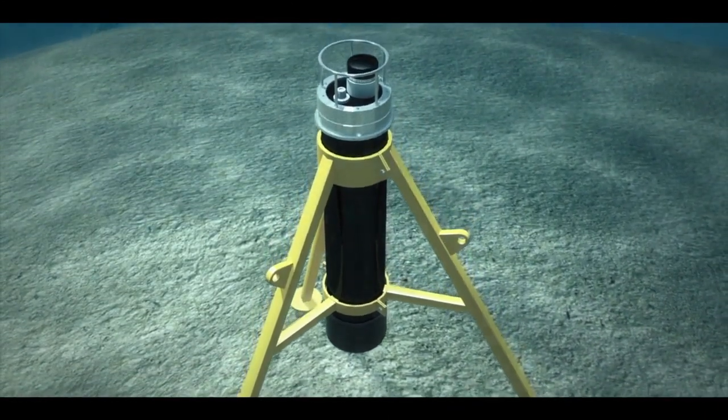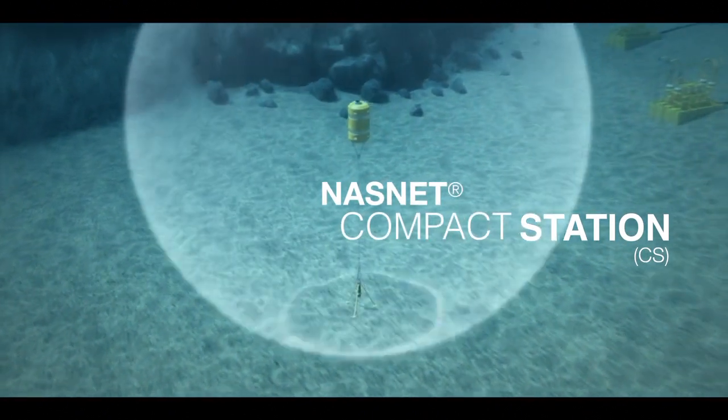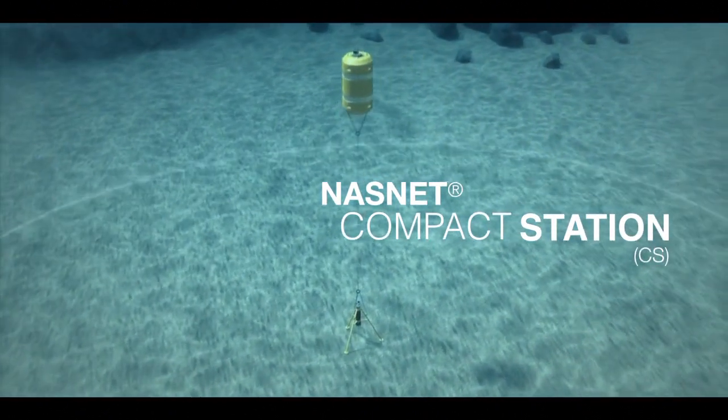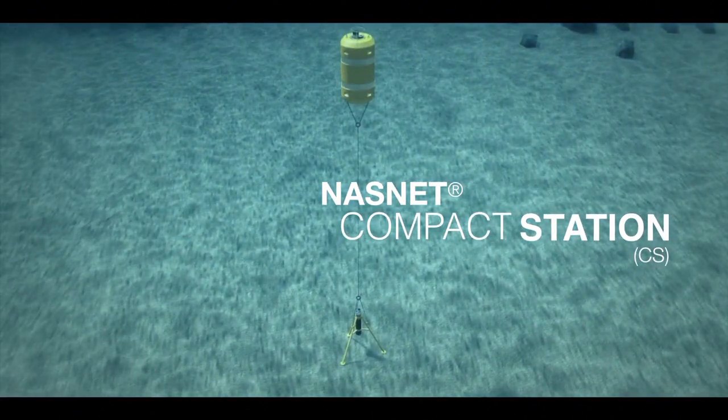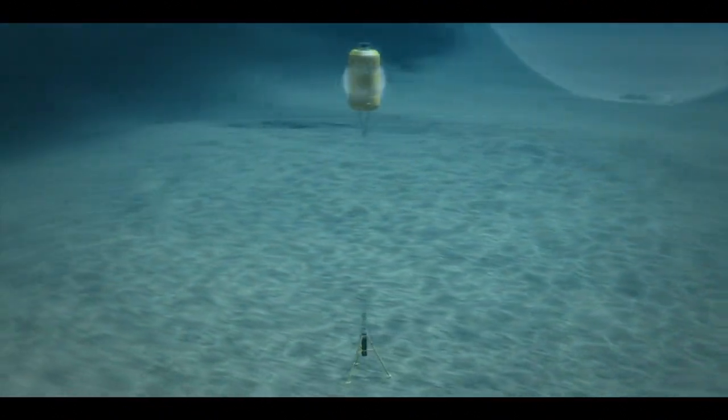The NASNET CS compact station uses a similar principle to the NASNET large station. Dual NASNET Mini stations are arranged with one in a frame on the seabed and the other in a tethered flotation collar. In this way, smaller projects can utilize many of the advantages offered by NASNET large stations.